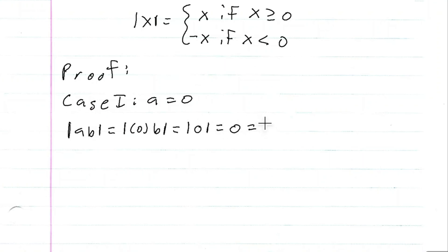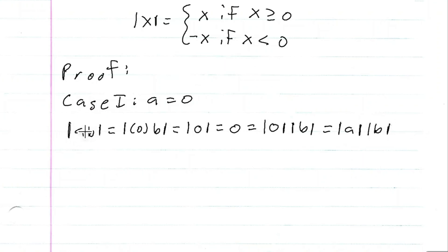That is equal to the absolute value of zero times the absolute value of b, which is of course the absolute value of a times the absolute value of b. So we have that the absolute value of ab equals the absolute value of a times the absolute value of b when a is zero.